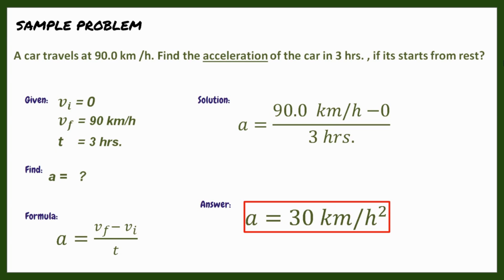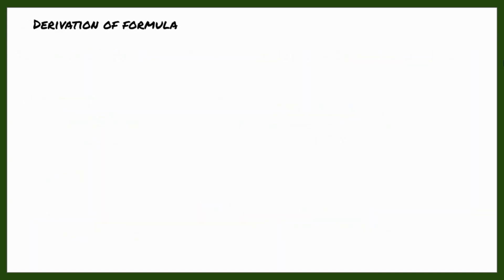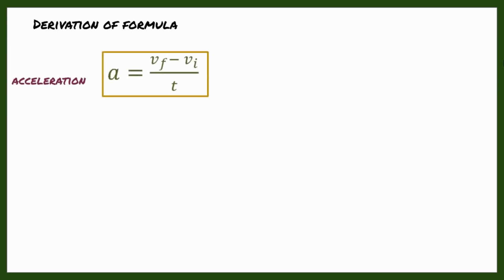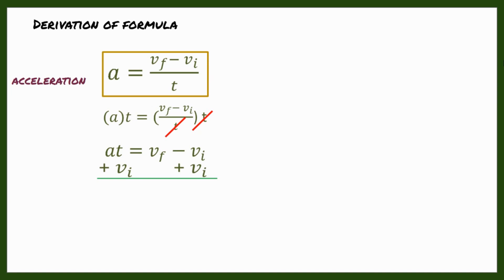Now, what if a sample problem asks for time or final velocity in the concept of acceleration? That's where derivation of formulas comes in, just like what we did in our previous video lesson on speed and velocity. To derive the formula for final velocity, start with the acceleration formula, multiply both sides by time, and cancel. This gives A × t = V_F − V_I. Then add V_I to both sides: V_F = V_I + A × t.